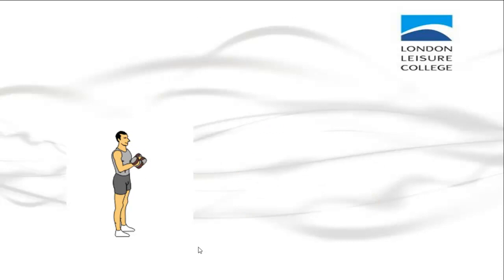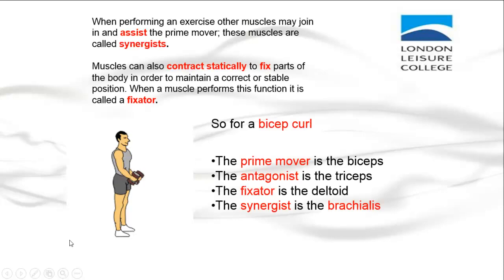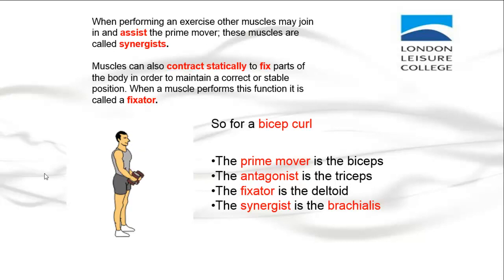We've talked about prime movers, agonists, and antagonists. Now we need to talk about two other elements. When performing an exercise, other muscles may join in and assist the prime mover — these muscles are called synergists. Muscles can also contract statically to fix parts of the body in order to maintain a correct or stable position; when a muscle performs this function it is called a fixator.